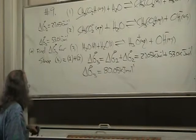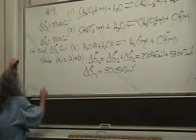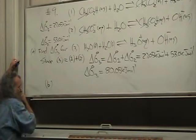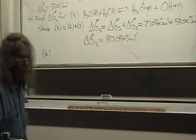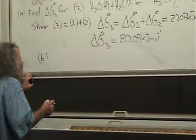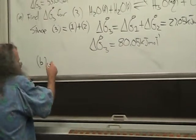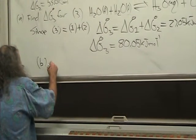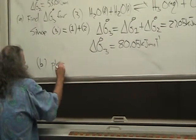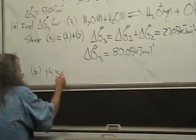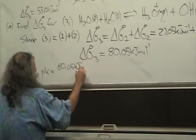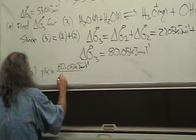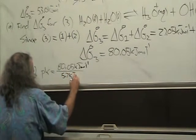Let's just go right to B underneath here. Part B is, find K for this reaction, which we've already had more than a lot of practice with that particular problem. So, pK is equal to 80.05 kilojoules per mole, divided by 5.7 kilojoules per mole.